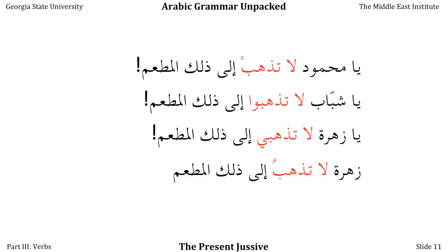So the مضارع مجزوم, the third form of the present tense, uses sukūn in the short forms, and in the longer forms looks exactly like the مضارع منصوب. We use it after لم to negate the past tense; after مَا لَم to mean 'unless'; and after لا to make the negative command or prohibition. We'll also use it for positive commands, but that will be the subject of a different video. We'll see you in the next video.